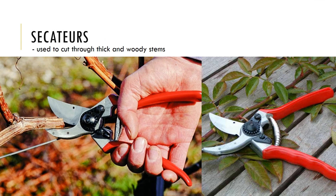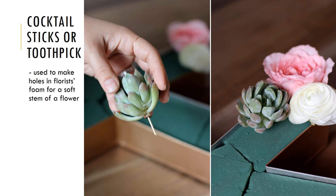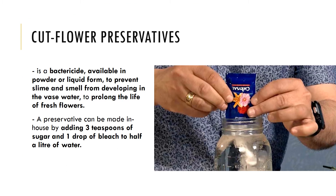Secateurs are used to cut thick woody stems. Toothpicks or cocktail sticks are used to make holes in florist foam for soft stems. Cut flower preservatives are a bactericide available in powder or liquid form to prevent slime and smell from developing in the vase water, prolonging the life of fresh flowers. This can also be made at home by adding three teaspoons of sugar and one drop of bleach to half a liter of water.